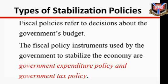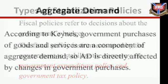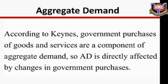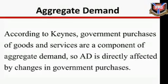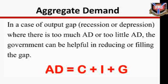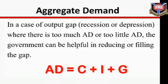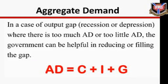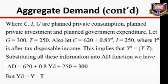Keynes argued that changes in government spending were probably the most effective instrument for offsetting recession. According to him, government purchases of goods and services are a component of aggregate demand, so aggregate demand is directly affected by changes in government purchases. In the case of an output gap — recession or depression — where there is too little aggregate demand, the government can help in filling the gap. For simplicity, assume aggregate demand is: AD = C + I + G, where C, I, and G are planned private consumption, planned private investment, and planned government expenditure.